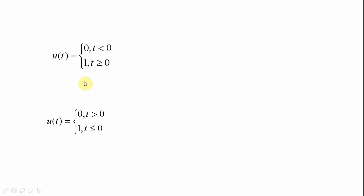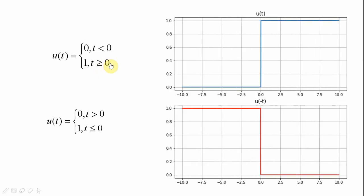Let us have a recap of the various aspects of this step signal. A unit step signal is defined as u(t), where its value is 0 for t less than 0 and it is 1 for t greater than or equal to 0. As shown in this figure, this is the plot of the unit step signal.